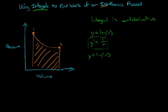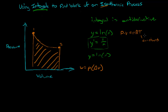Normally we could find work using the formula work equals pressure times delta volume. But since we don't know what the instantaneous pressure is at any given point, we have to use integrals to find that. Taking the ideal gas law, PV equals nRT — in an isothermal process, temperature is constant, R is a constant, and the number of moles doesn't change either. So this whole thing is just a constant, meaning pressure times volume equals a constant.